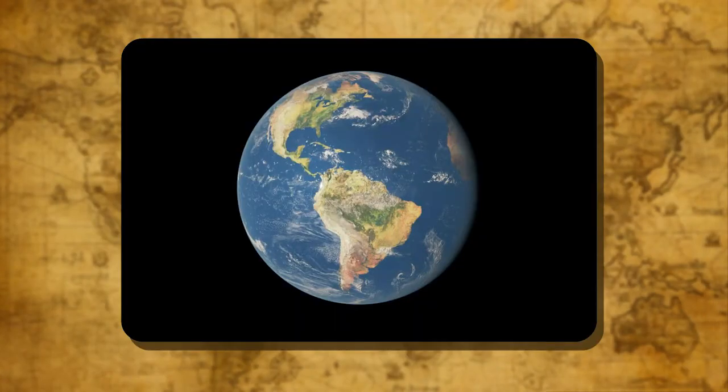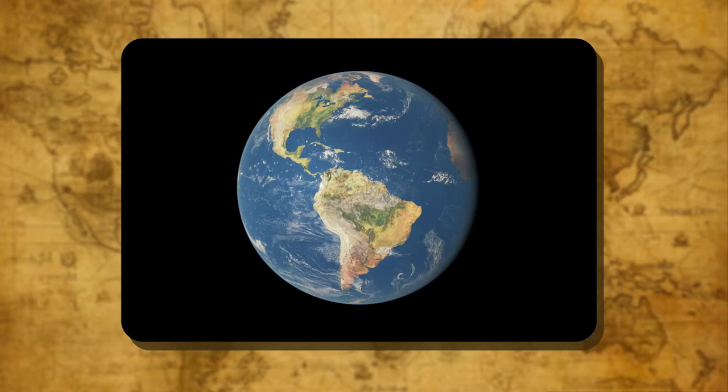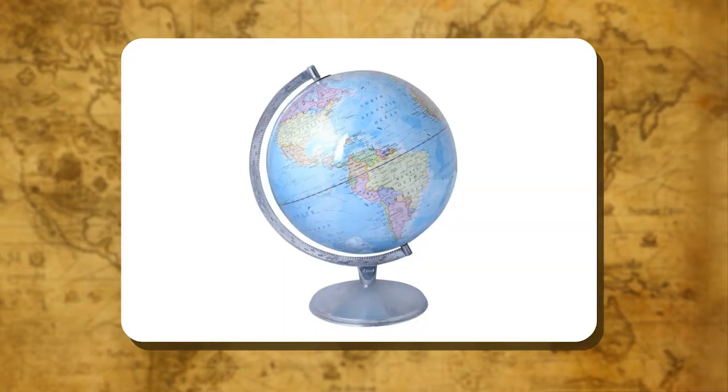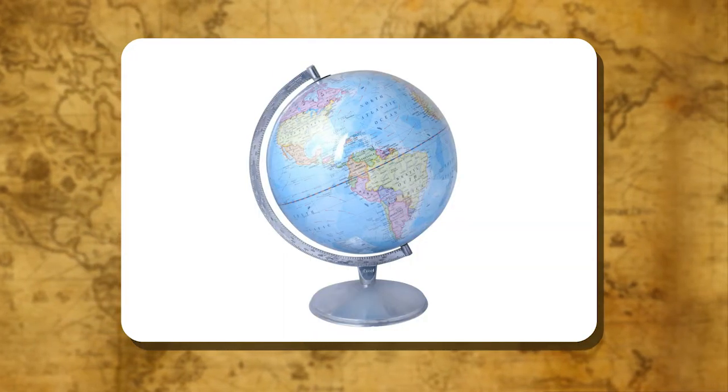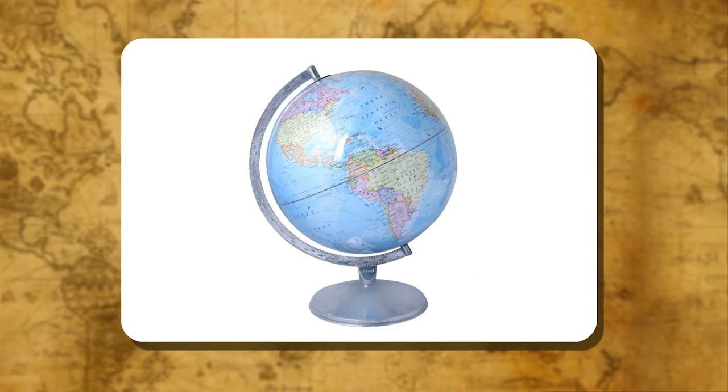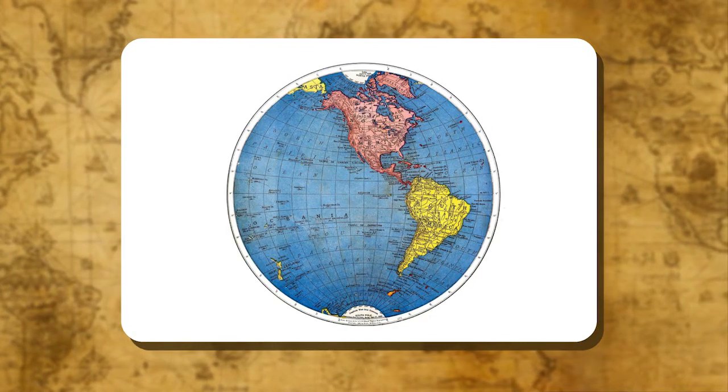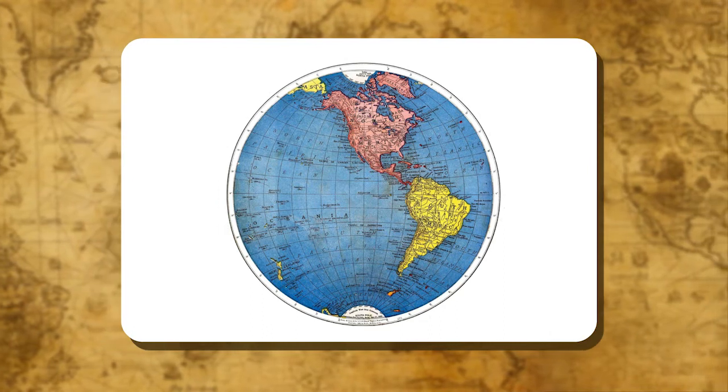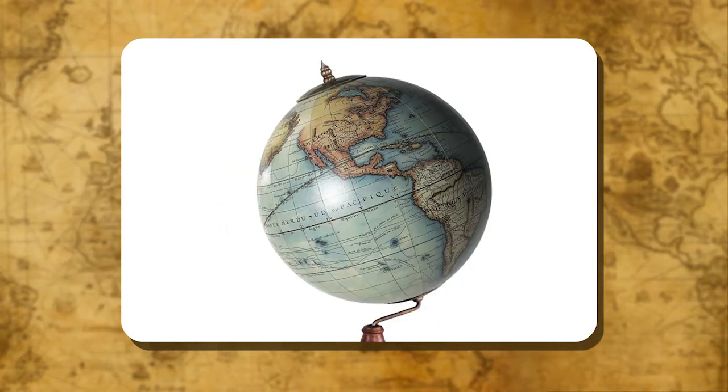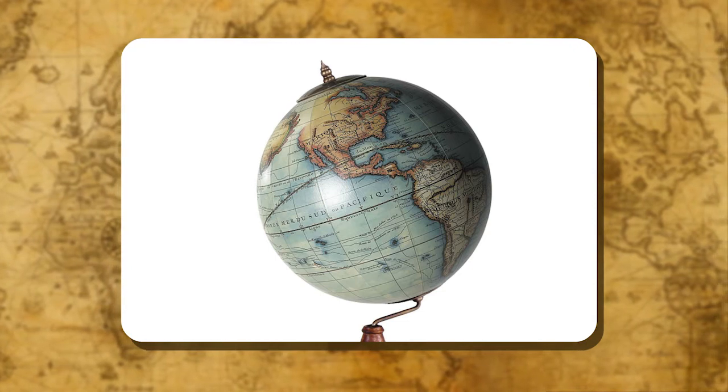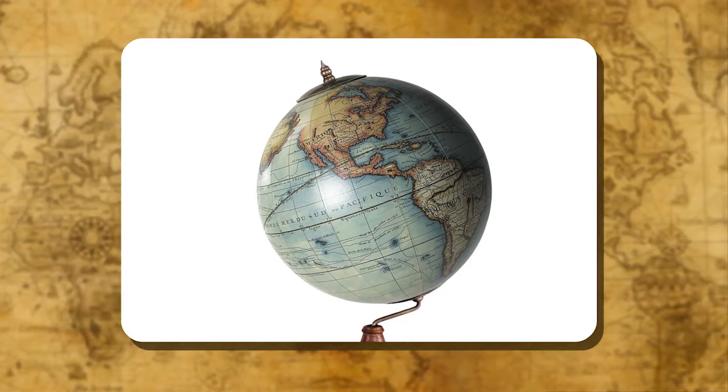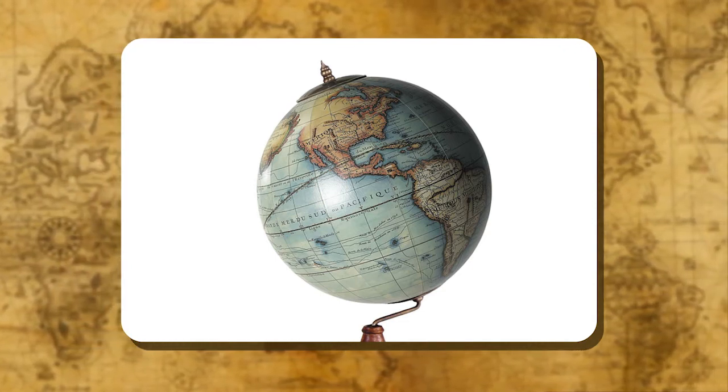We already know that the earth is spherical in shape. The model showing the accurate shape of the earth is called the globe. On the globe, the shapes and sizes of continents and oceans are correctly represented. The globe is actually a correct replica of the earth. It is the best representation of the earth, though on a small scale.